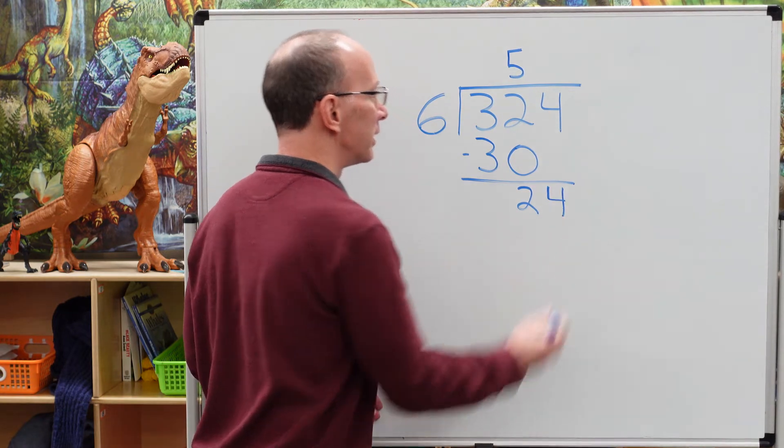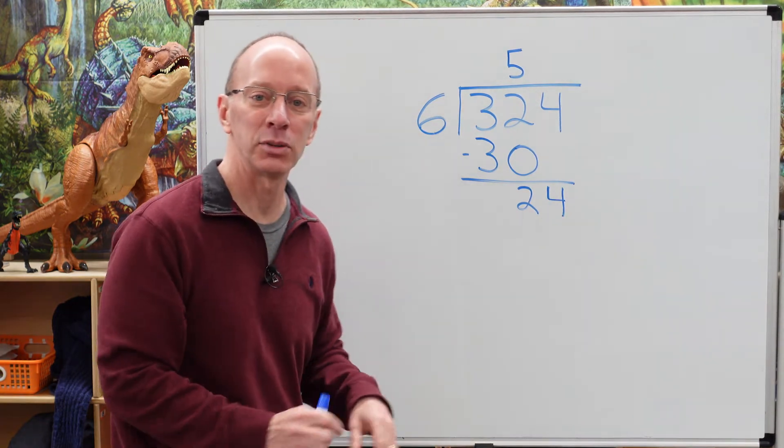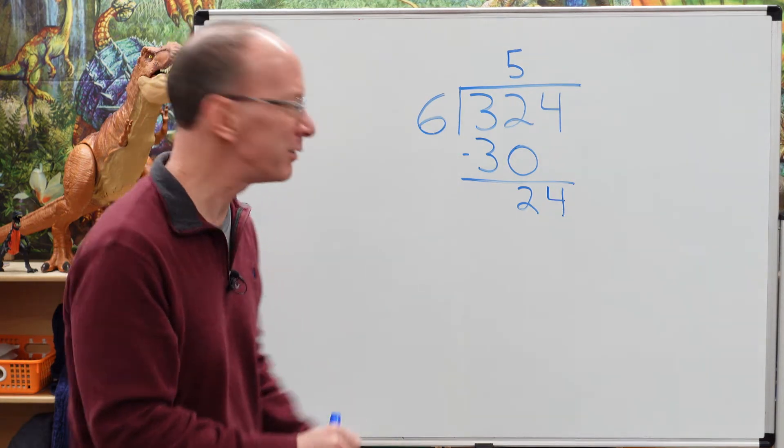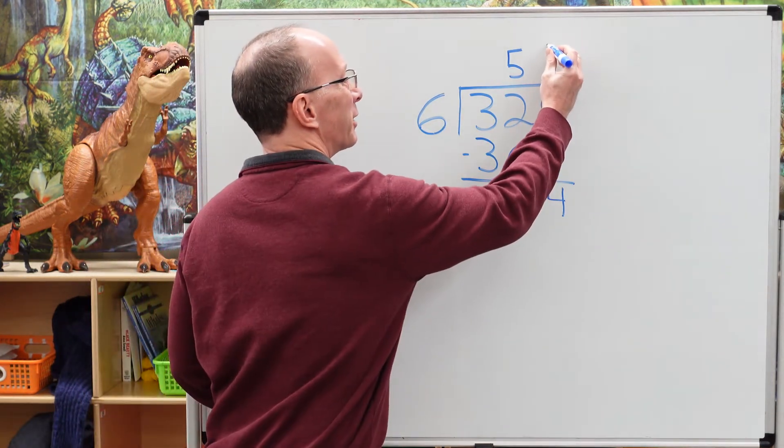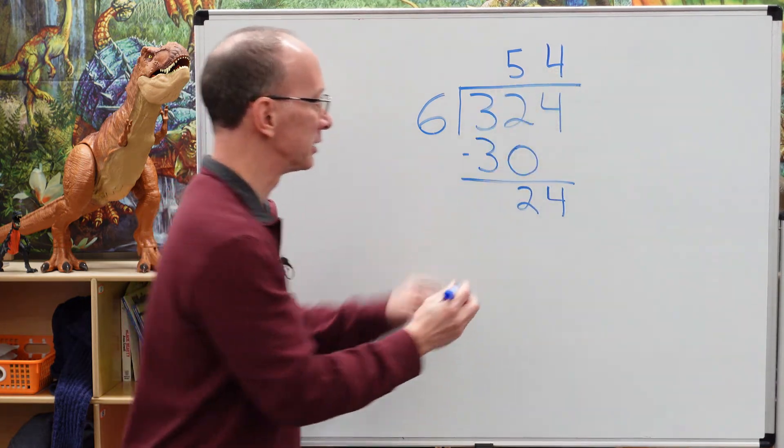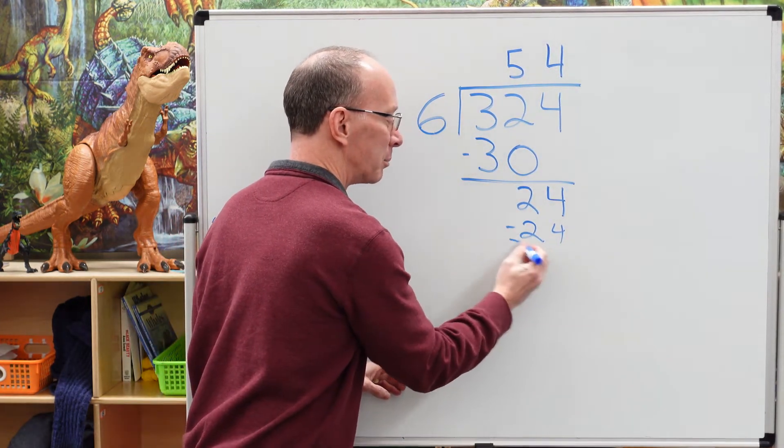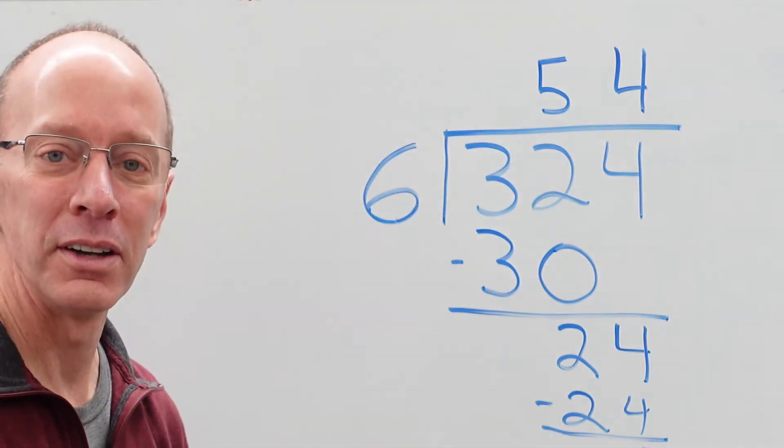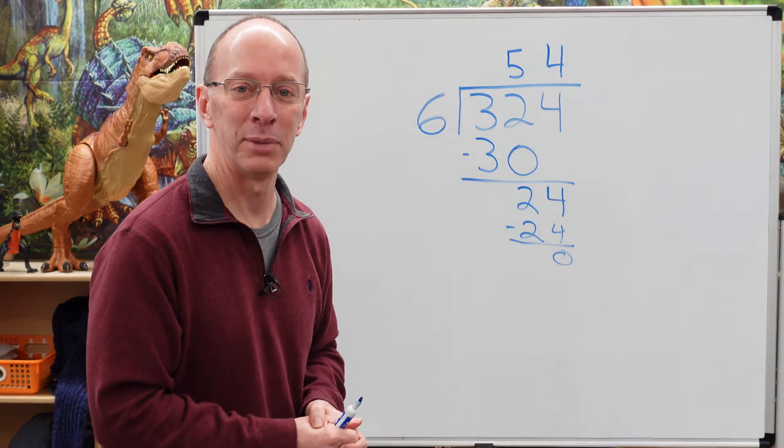Here is four. How many times can I put six into 24? Six times three is 18, six times four, bingo, 24. We put our four right here. Four times six is 24 with a remainder of zero. So our answer is 54. 324 divided by six.